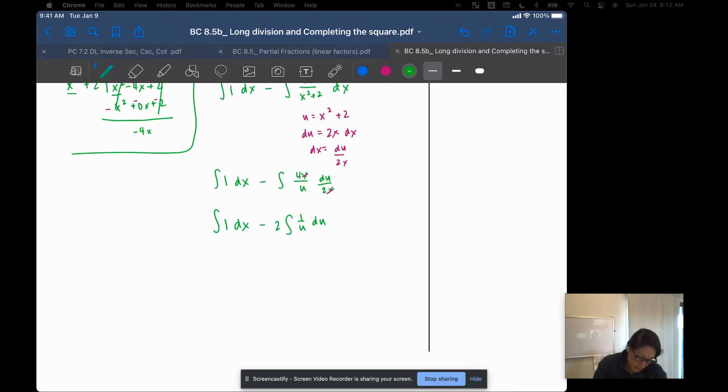And I get 1 dx minus 4 divided by 2 is 2 times the integral of 1 over u du. So the integral of 1 is x minus 2, 1 over u is u to the negative 1, which is ln of the inside, ln of u, plus c, and then I can replace my u in the absolute value of x squared plus 2 plus c. That's it. Alright, let's do the next one.